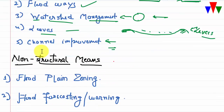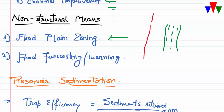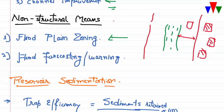Non-structural flood control methods include flood plain zoning, where land use in the flood plain area is regulated. If the maximum extent of the flood plain is known — up to where the river can flood — then settlement and construction are not allowed within that zone, protecting human life and resources in the event of future floods.